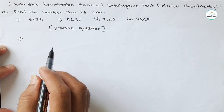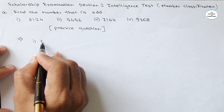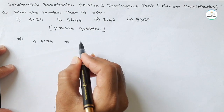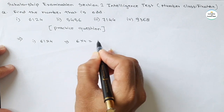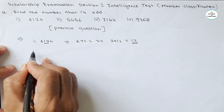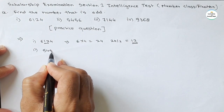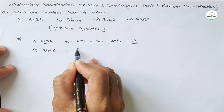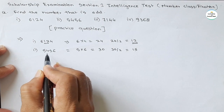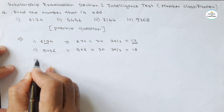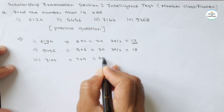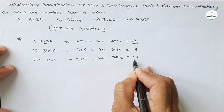In this question there is a relation. In the first number 6124, I will directly give you the answer. If we take the multiplication of the first and last digit — 6 into 4 — we get 24. And if we divide 24 by 2, we get 12, which is the middle number. Similarly, for the second number 5456, multiplication of first digit and last digit: 5 into 6 gives 30. Dividing 30 by 2 gives 15, but the middle number is 45. For the third number 7144, multiplication of first and last digit: 7 into 4 is 28. Dividing 28 by 2 gives 14, and 14 is there.